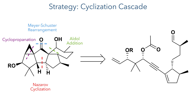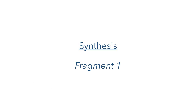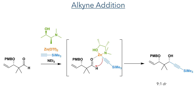This precursor was constructed using two different fragments, so let's look at the synthesis of fragment one. This started with an alkyne addition to an aldehyde derived from pantolactone. N-methyl ephedrine was used as a chiral catalyst and this coordinates to zinc(II), which was present as zinc triflate. This is proposed to form an organometallic species with the alkyne upon deprotonation with triethylamine, and this complex can coordinate to the aldehyde and deliver the nucleophile selectively to one face due to the chirality of the N-methyl ephedrine ligand. This formed a product in a 9:1 dr, which was taken forward without purification.